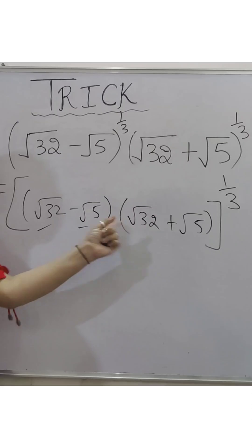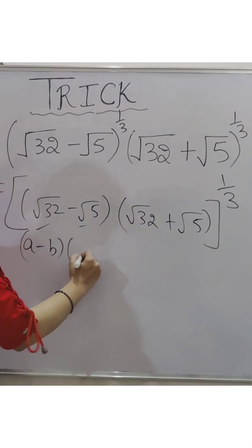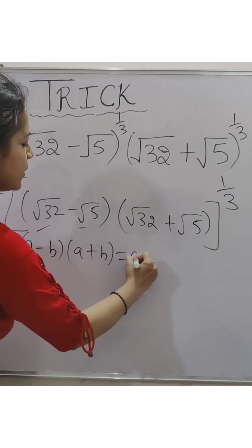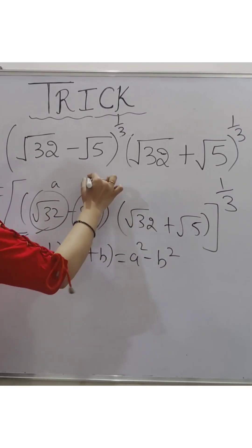friends, this is the form A minus B and A plus B. We have identity A minus B times A plus B which is equal to A square minus B square. So root 32 is your A and root 5 is